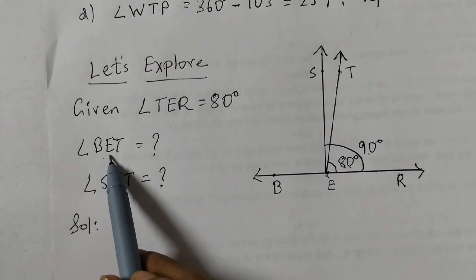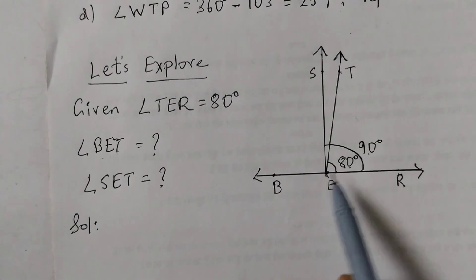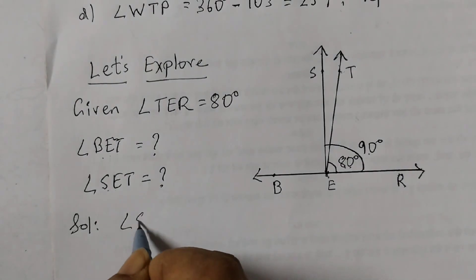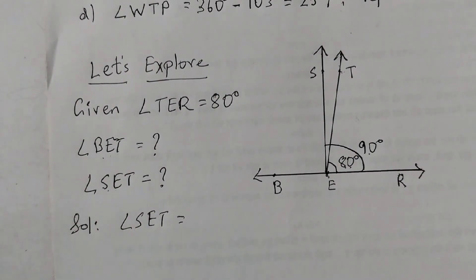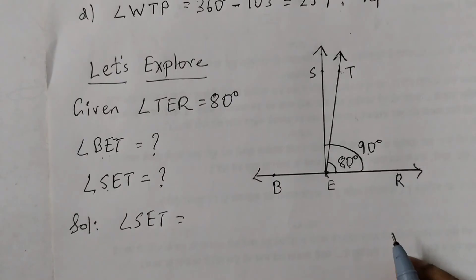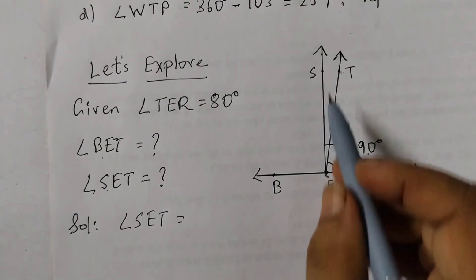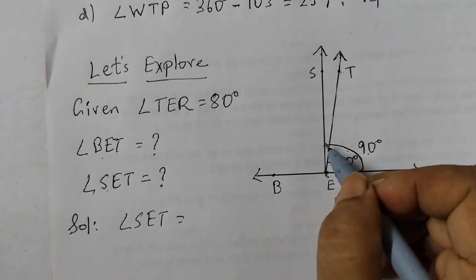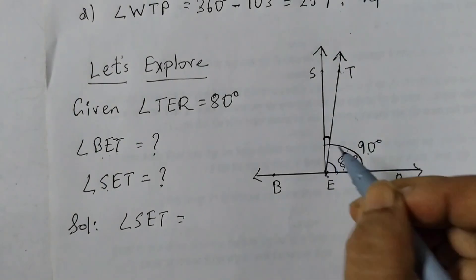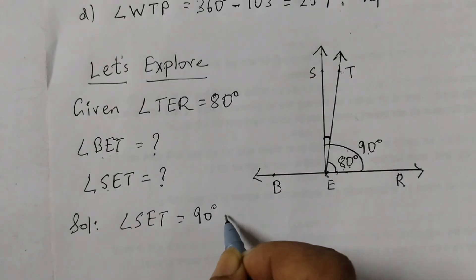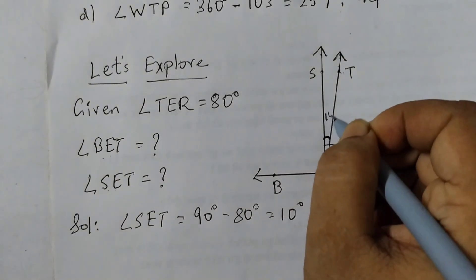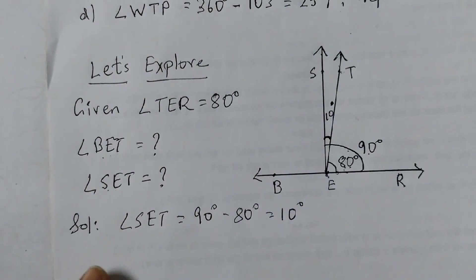We need to find out angle BET and angle SET. So first let's find out angle SET. For this you don't need to measure it, you can just do subtraction. So this angle here is 90 degrees, right? This full thing is 90, and this is 80. We are trying to find out this angle here, SET. So 90 degrees minus 80 degrees, that is 10 degrees. So this angle here is 10 degrees.